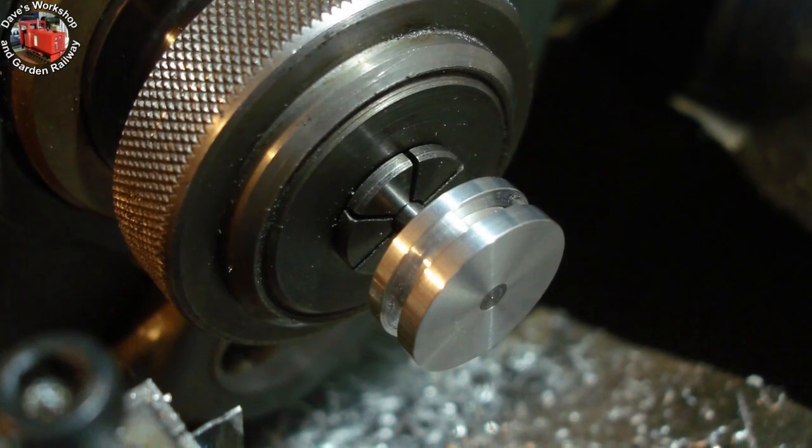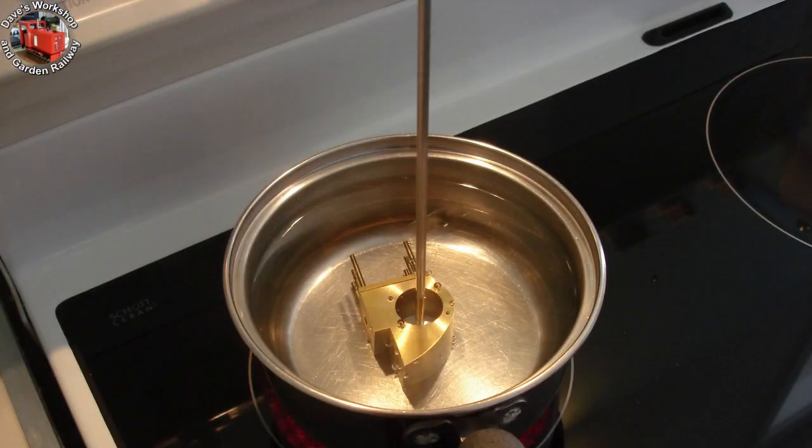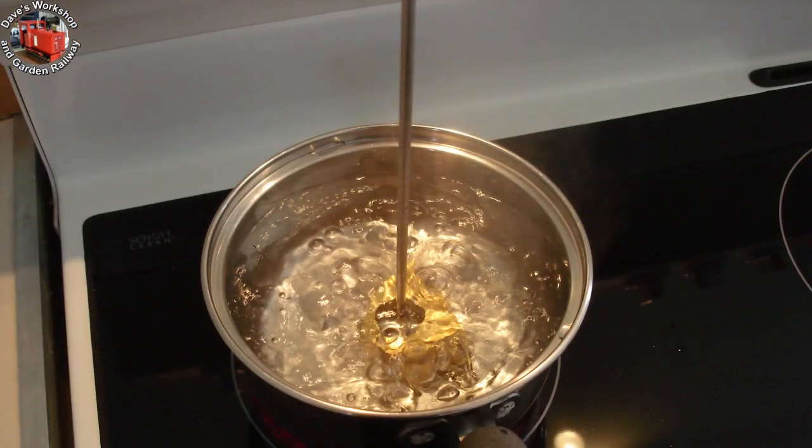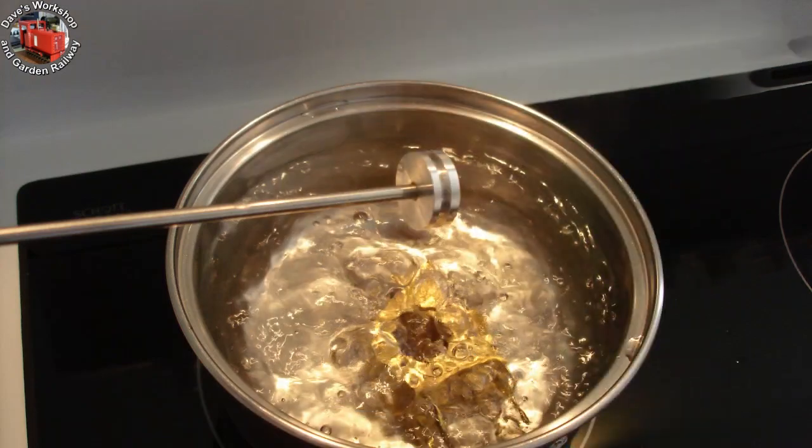To help with concentricity I wanted the rod diameter to provide most support for the piston and not the thread. The piston and rod were turned in the collet chuck. It's got a much better grip than the three jaw, essential for threading with the button die.